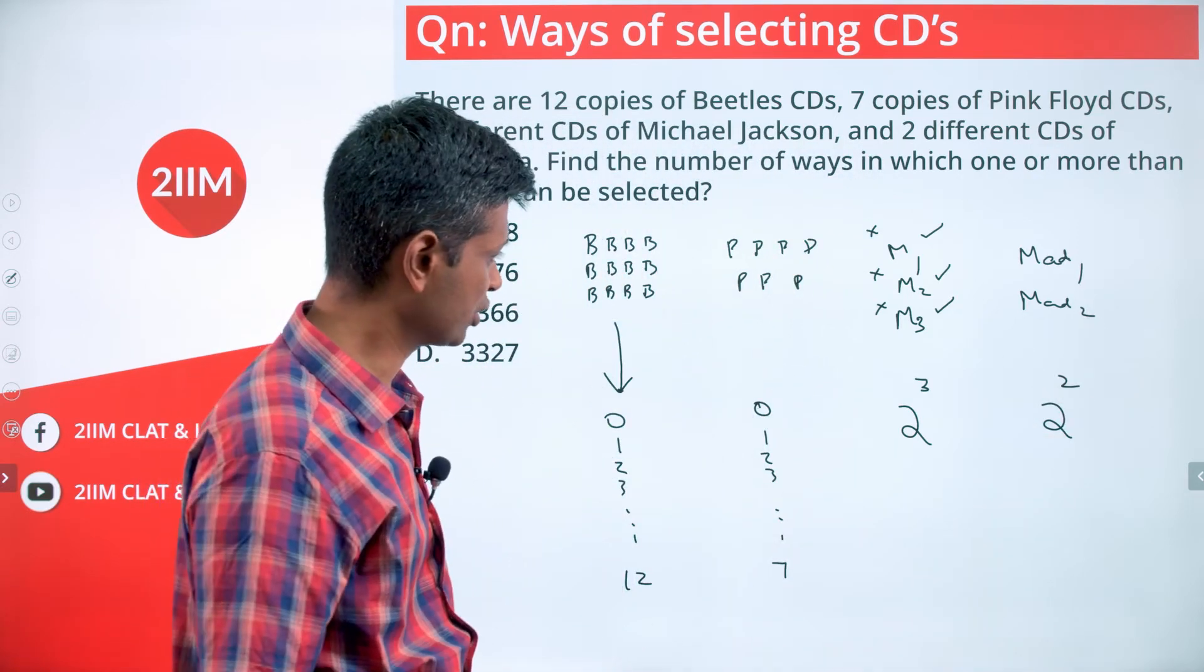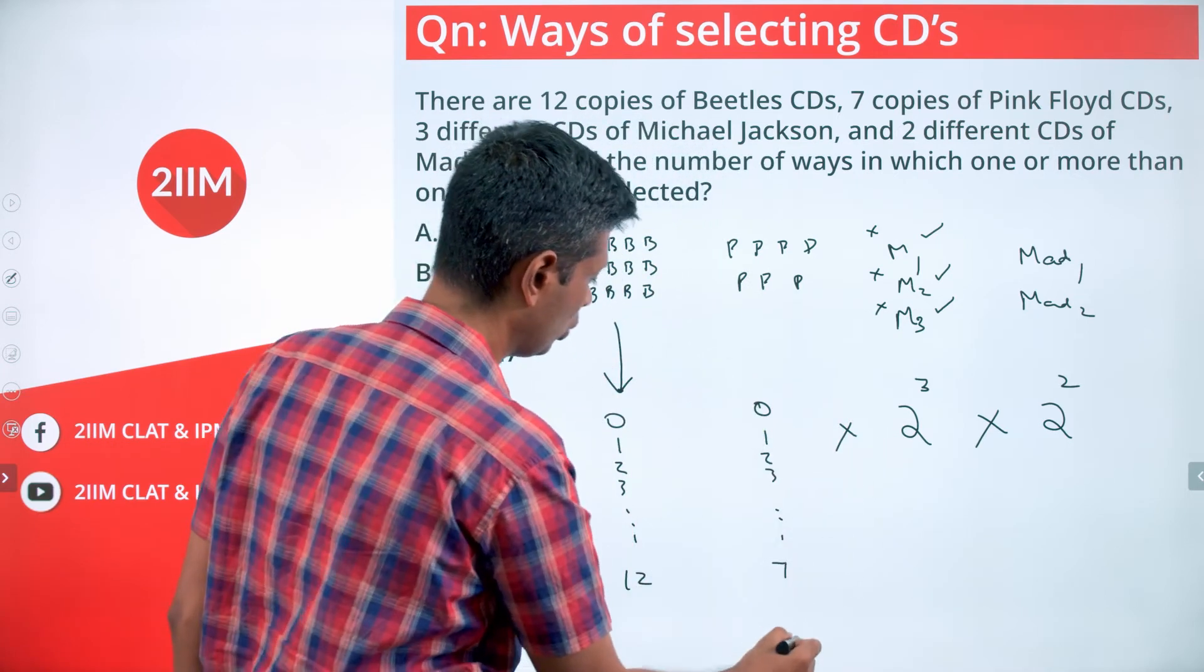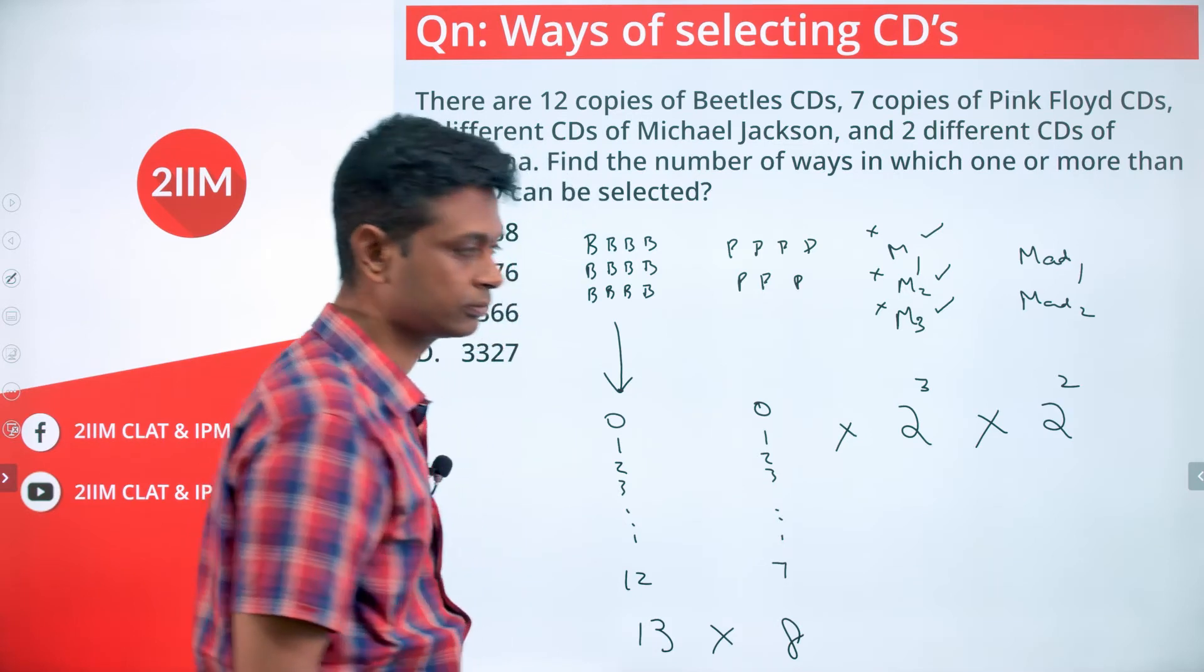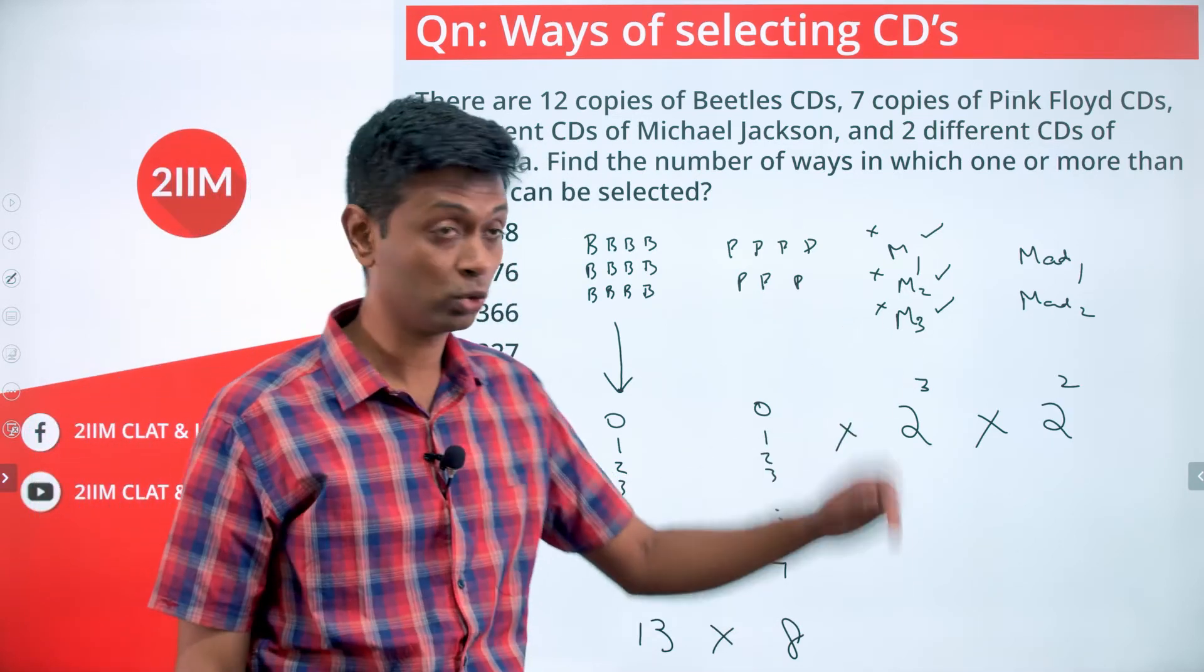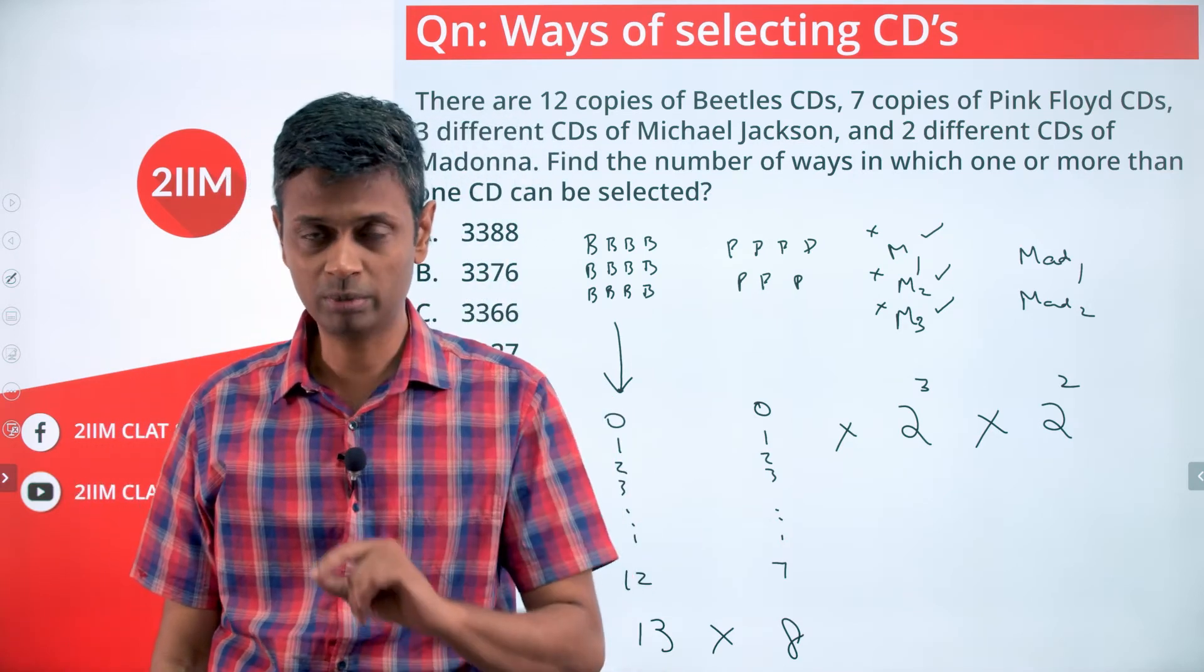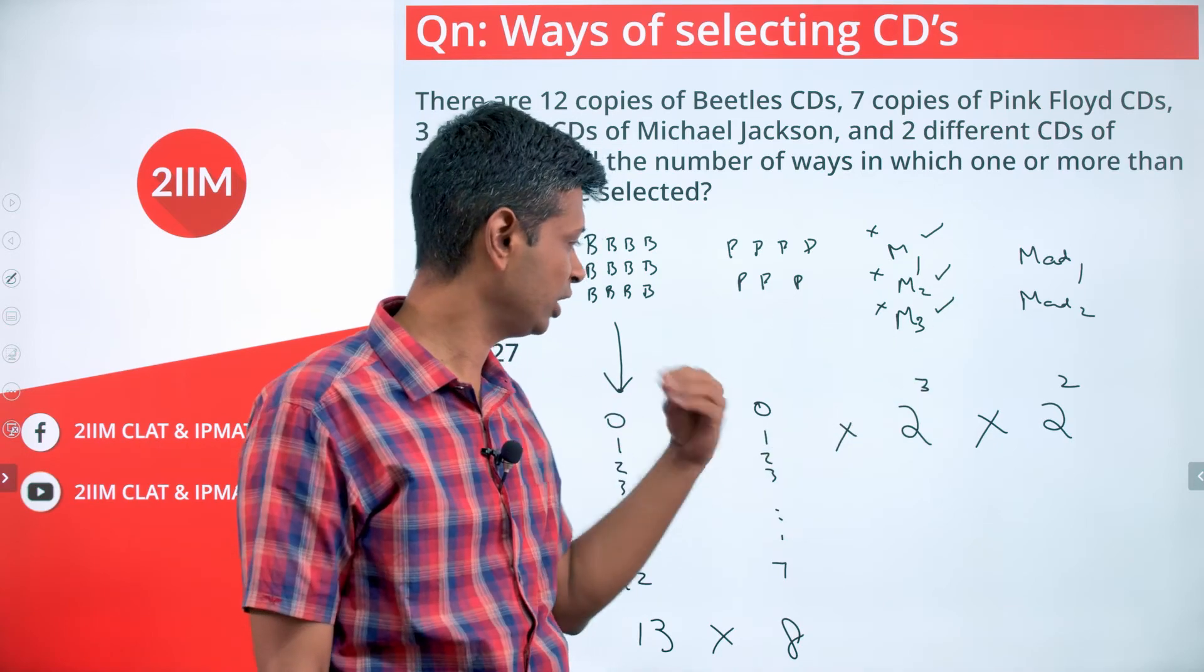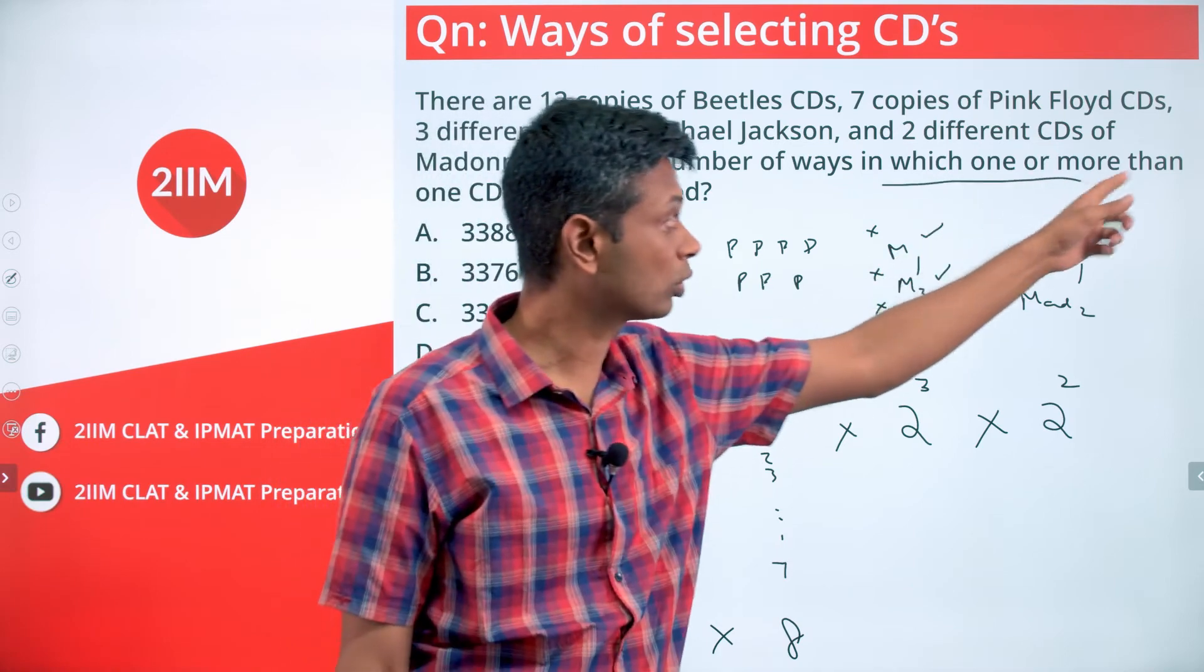My total number of possible selections is 2 squared × 2 cubed × 8 × 13, which is 13 × 8 × 2 cubed × 2 squared. However, this particular selection includes one possibility where nothing is selected: no Madonna, no Michael Jackson CD, no Pink Floyd, no Beatles. That can't be the case because I'm selecting one or more.